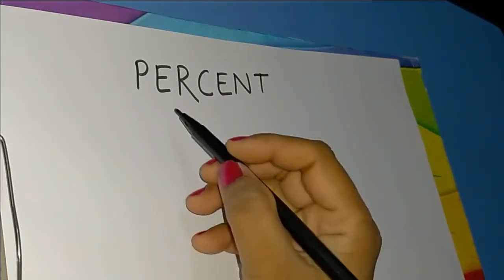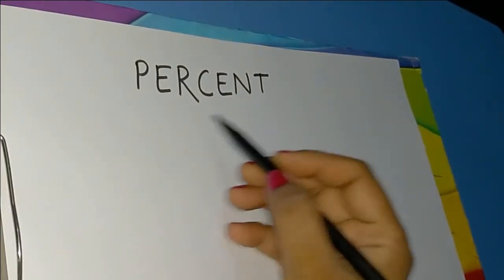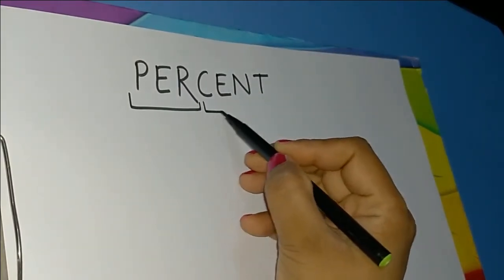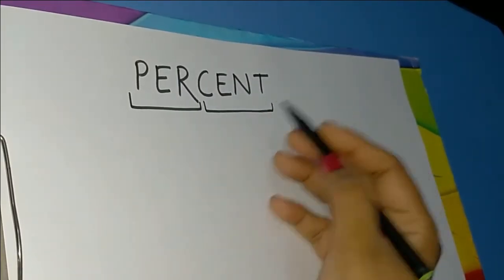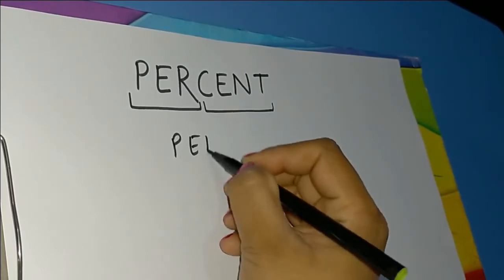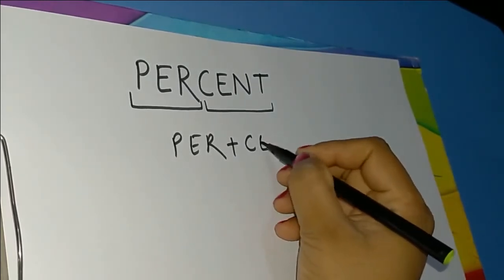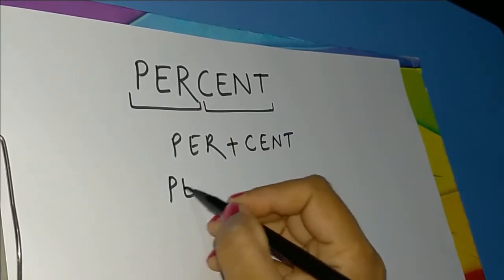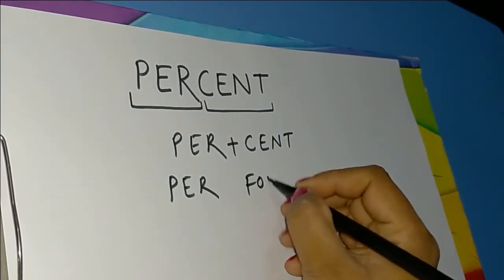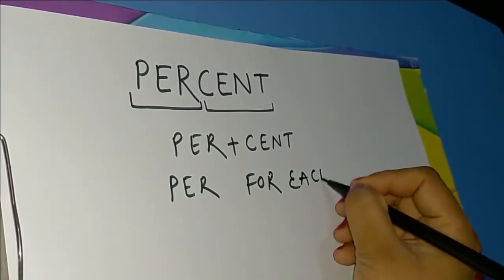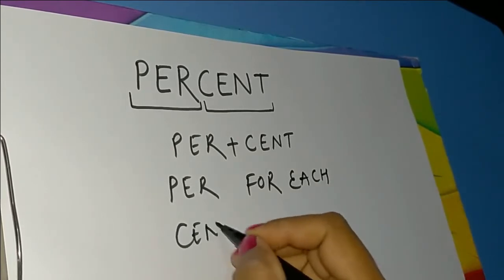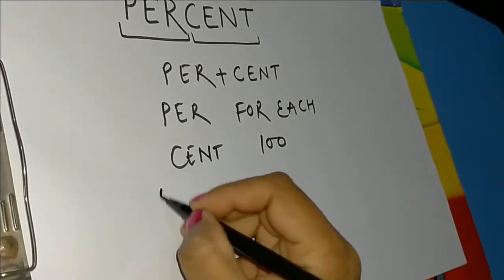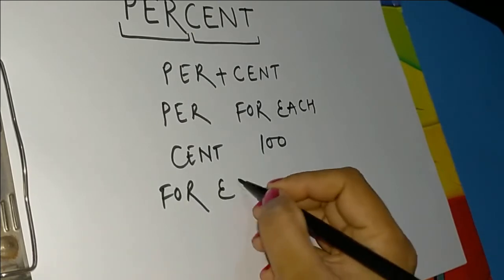First of all, let's understand the meaning of the word 'percent.' This word is made up of two words: 'per' and 'cent.' The dictionary meaning of these two words tells us that 'per' means 'for each' and 'cent' stands for 'hundred.'